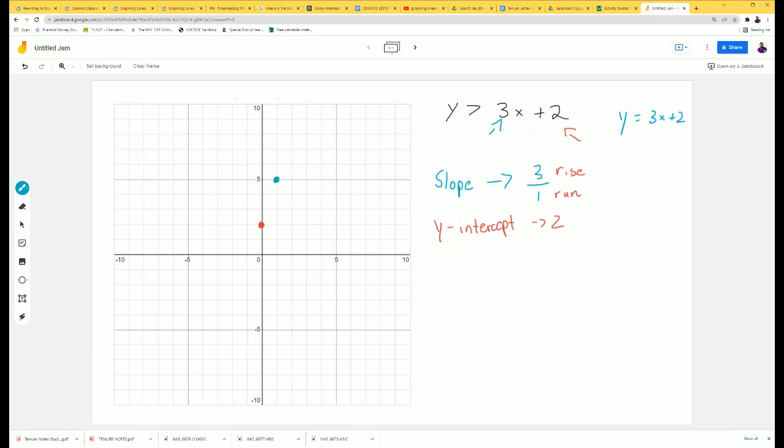Then we want another point, so we go again up 3, 1, 2, 3, and over 1. Now I can't do that again because there's no more space, but if I want another point I go back to the original and do the opposite: down 3, 1, 2, 3, and over 1 to the left.